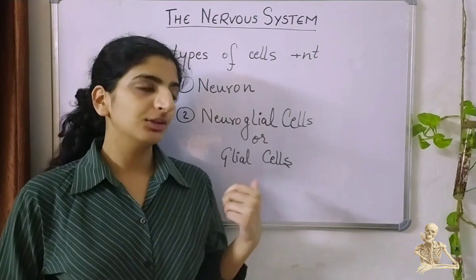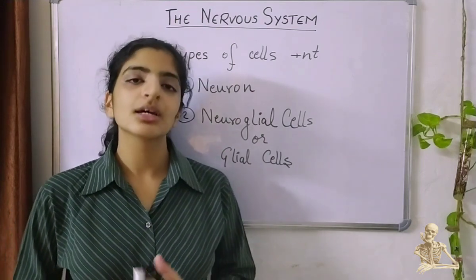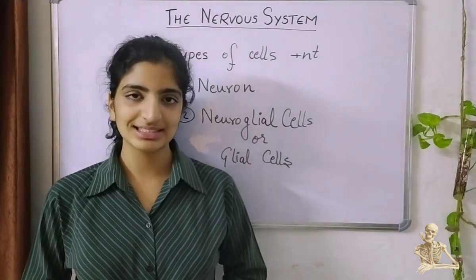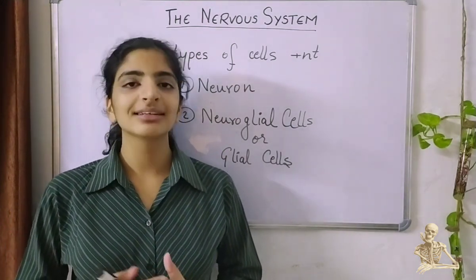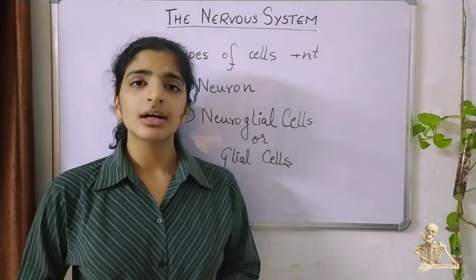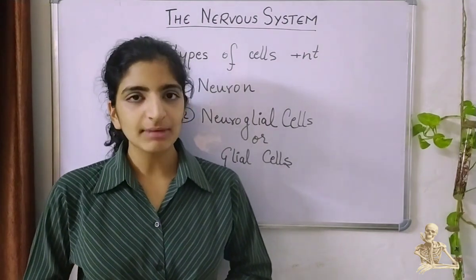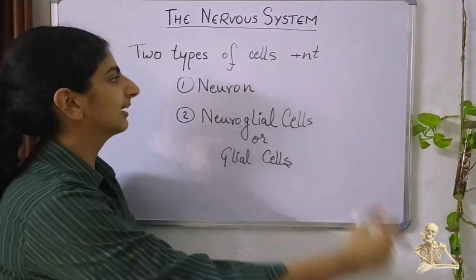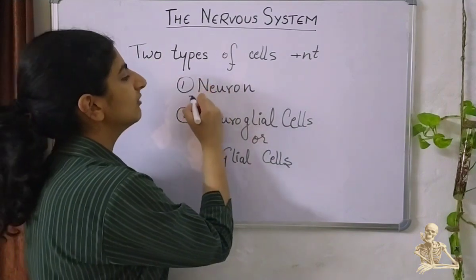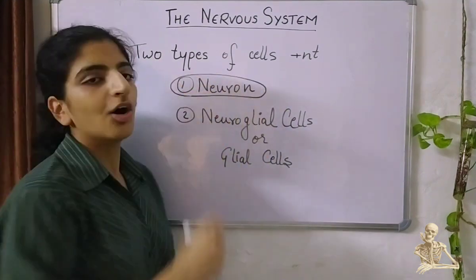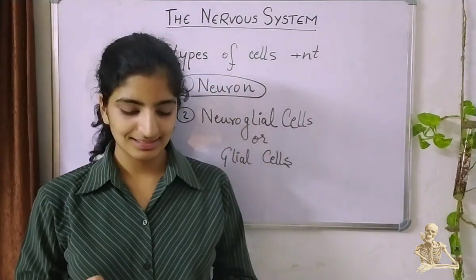The neuroglial cells also hold the neurons in place and they make the myelin sheath of the neurons. We will understand what exactly a myelin sheath is when we know the structure of neurons.